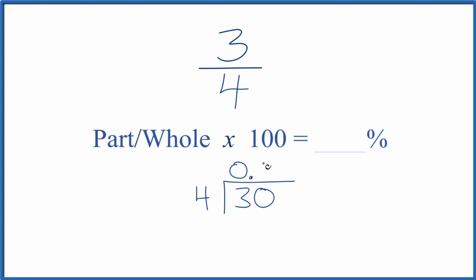So 4 times 7, that's 28. That's pretty close. 30 minus 28 is 2. Let's move over one more here. So now we have 2, 4 times 5, that's 20.